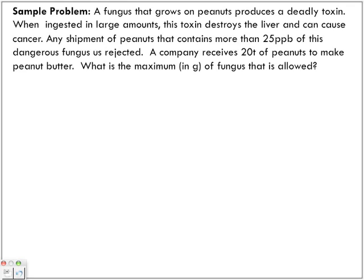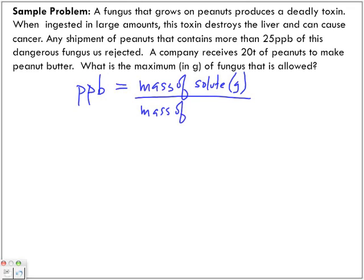What is the maximum in grams of fungus that is allowed? We start off with our equation. We're looking at parts per billion, so PPB equals mass of solute in grams divided by the mass of solution in grams times, because it's parts per billion, 10 to the power of 9.